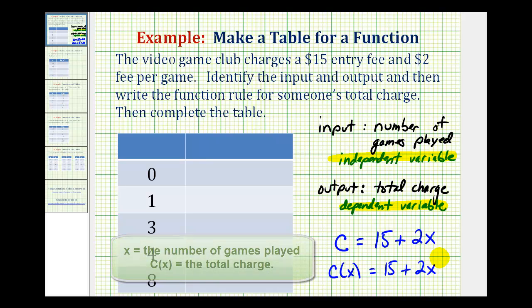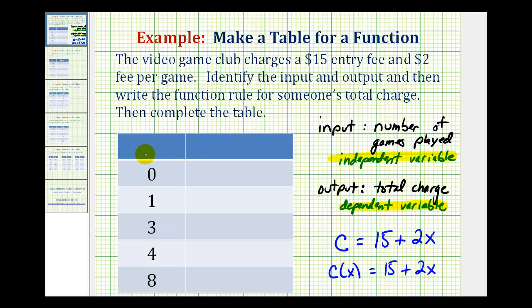And now using our function rule, we can complete the table. So this first column will be the input, or the number of games played. The second column will be the output, or the total cost. So using our function rule, this first column would be X, the second column would be C of X.